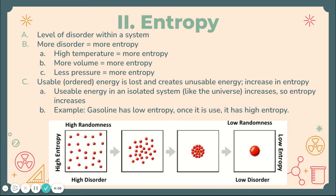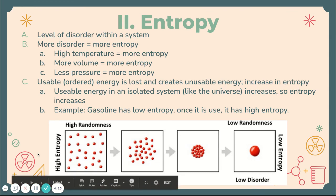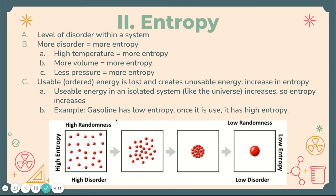Everything in our universe is expanding outwards, meaning the volume is getting bigger, which allows for more entropy to increase. Another example: gasoline in its liquid form has low entropy — liquids tend to be more ordered. But once we use it and put it through a combustion process, we create carbon dioxide, which is a gas, and water in its vapor form, which also have higher entropy — they're gases, which have more entropy than liquids.